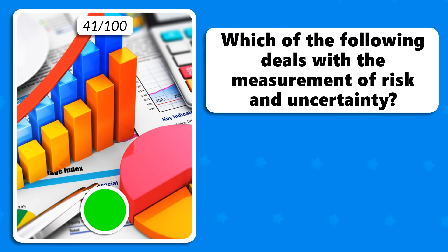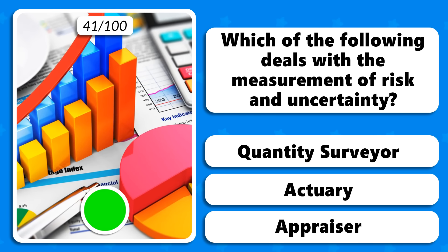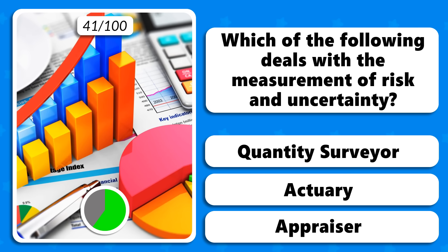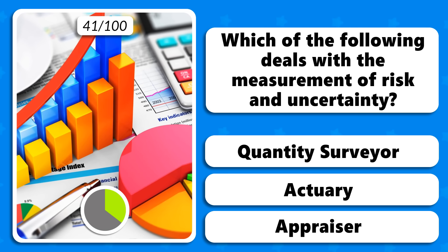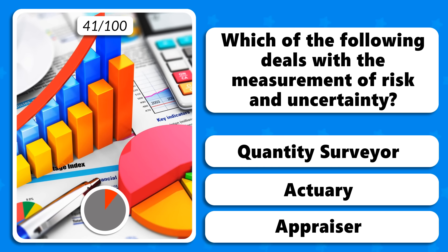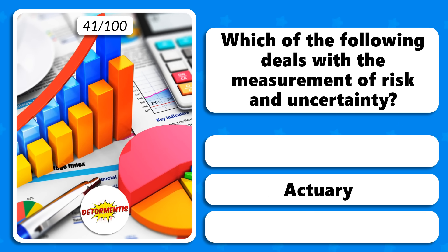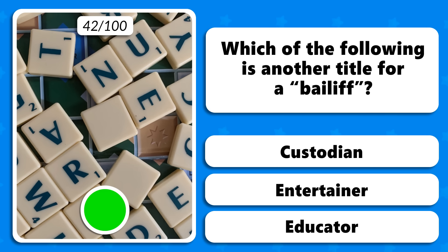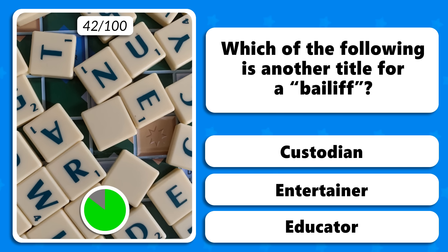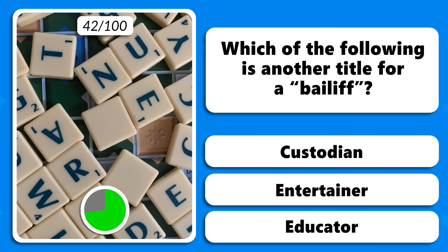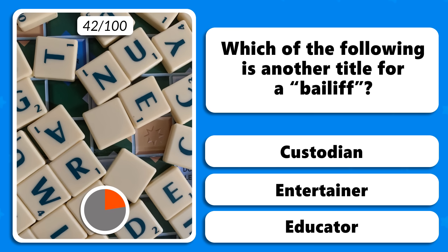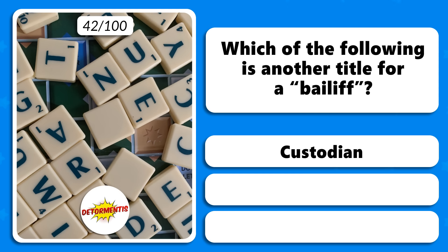Which of the following deals with a measurement of risk and uncertainty — a quantity surveyor, an actuary or an appraiser? Which of the following is another title for a bailiff — custodian, entertainer or educator? Custodian.